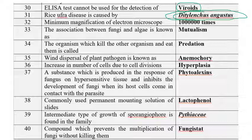The minimum magnification power of an electron microscope is 10 lakh times. Modern advanced microscopes like SEM and TEM (scanning and transmission electron microscopes) can magnify more than 1 crore times. The association between fungi and algae is known as mutualism.